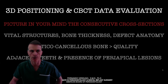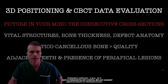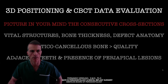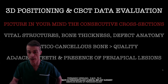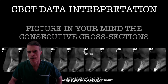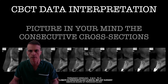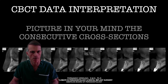We want to eliminate any potential risk by addressing and locating the lateral structures. We want to have an idea of the anatomy, bone thickness, and the amount of tissue that we have on the side where we're going to place our implants. We also need to evaluate adjacent structures, the location of the teeth, and the presence of any potential periapical lesions. It's very important to evaluate each individual cross-section, which can be done with most CBCT data programs.